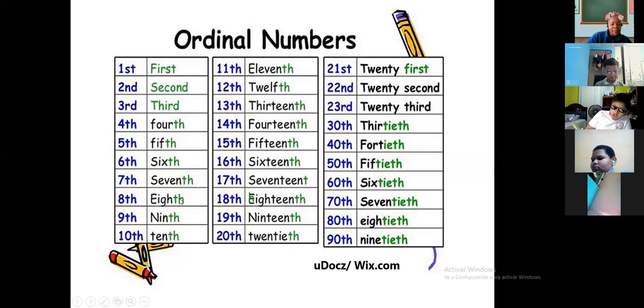Todos llevan TH al final. Los únicos que cambian son 1st, 2nd, and 3rd. Esos tres son los únicos que cambian. Los demás son completitos. You need to recognize that part. Necesito que reconozcan esto. 1st, 2nd, 3rd, 4th, 4th, 6th, 5th, 36th, 7th, 8th, 9th, and 10th.